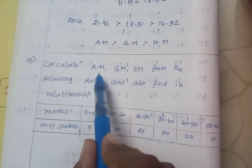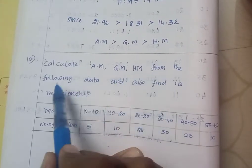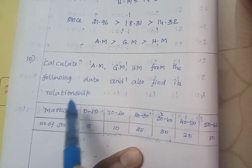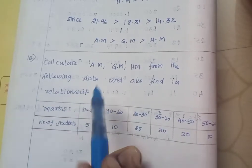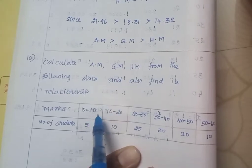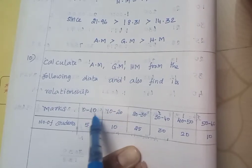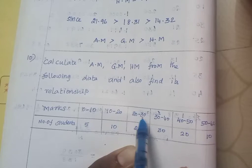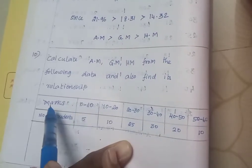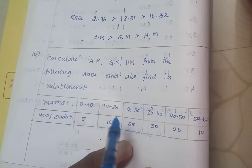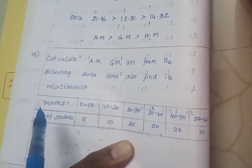Calculate the arithmetic mean, geometric mean, and harmonic mean from the following data and also find the relationship. Marks and number of students are given. This is a sample with continuous data, not discrete values. The class intervals are 0 to 10, 10 to 20, 20 to 30, 30 to 40, 40 to 50, 50 to 60. They didn't give the x values directly.